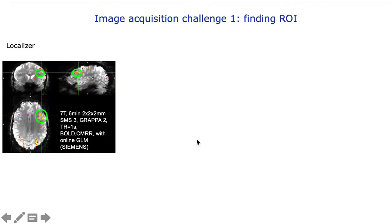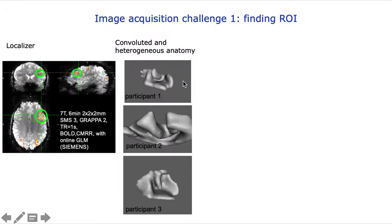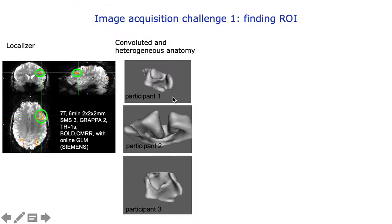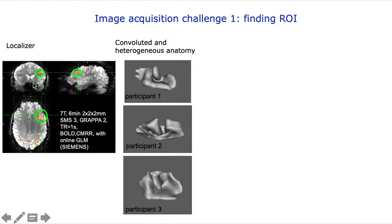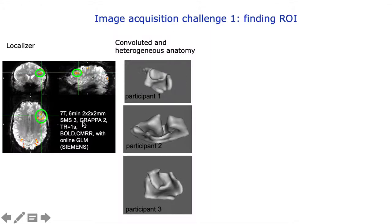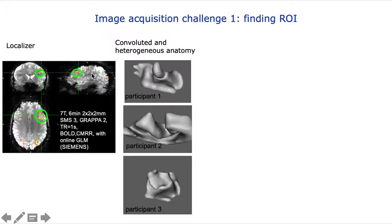The first big challenge we had to deal with was to find the ROI. Unlike many primary areas, DLPFC does not really have clear anatomical folding landmarks, as you can see here for three participants. It's mostly this kind of bump coming out of the agramatis sheet in a very variable fashion. Thus, we always had to do this six-minute online localizer with real-time analysis directly at the scanner console.